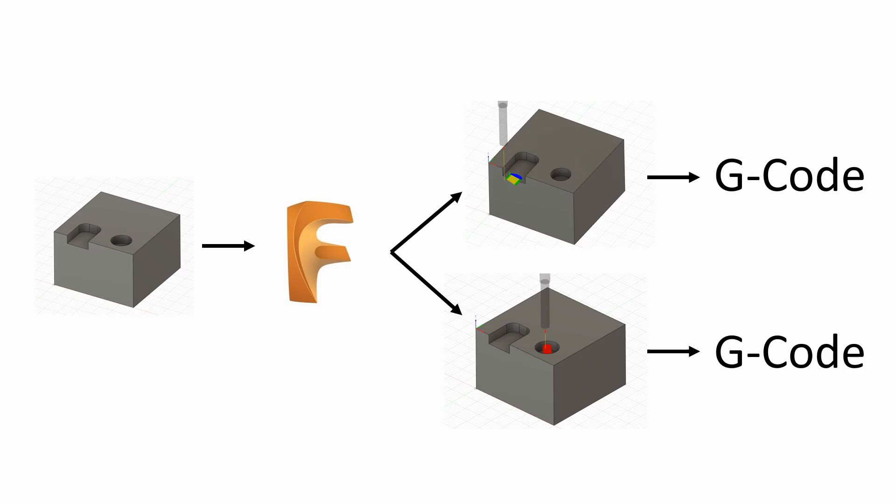Using Fusion 360, it is time to generate the toolpaths and export the G-code for the CNC machine. For the slot, 2D Adaptive was chosen. The slot should not be a big problem since we do not need to plunge into the material and can come in from the front. For the plunge into the hole, a helical toolpath was chosen. Since this operation is more critical the helix angle is set to 0.02 degrees.